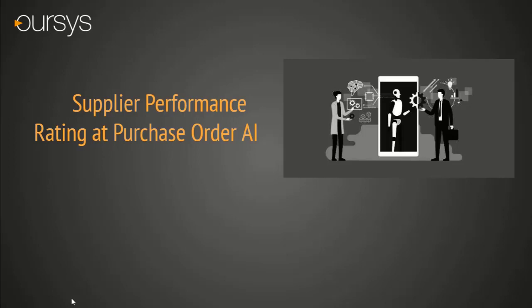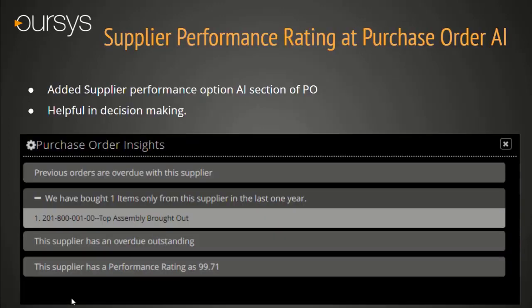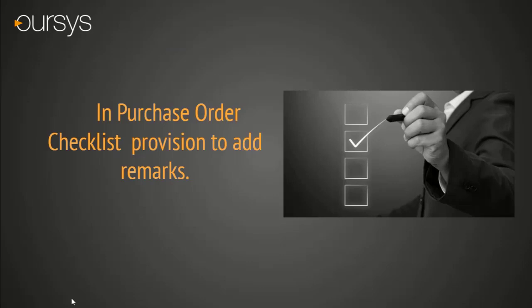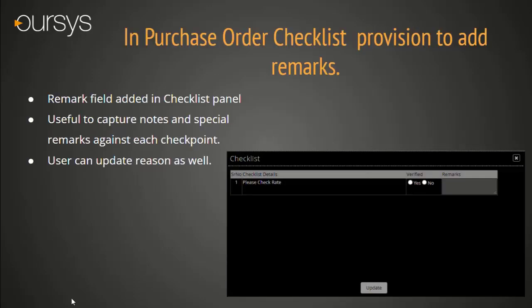Supplier Performance Rating at Purchase Order — one more point added in Artificial Intelligence. In the Purchase Order detail page, you can see the supplier performance rating ratio. It helps to take the decision whether to raise the purchase order or not, and also helps in future audits where a purchaser is giving a repeat purchase order to a bad performer. In Purchase Order, a Checklist provision is added. In the checklist panel, a new Remarks field is given to capture the reason or special note in case we are not able to follow the checkpoints, so in the future we can refer it and take a decision.